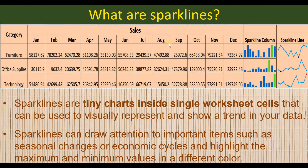Let's understand what sparklines are. On your screens, you can see category-wise sales data for a period of one year from January to December in respect of three product categories, namely furniture, office supplies, and technology. In the last two columns, you can see small charts — this is a column sparkline and this is a line sparkline.